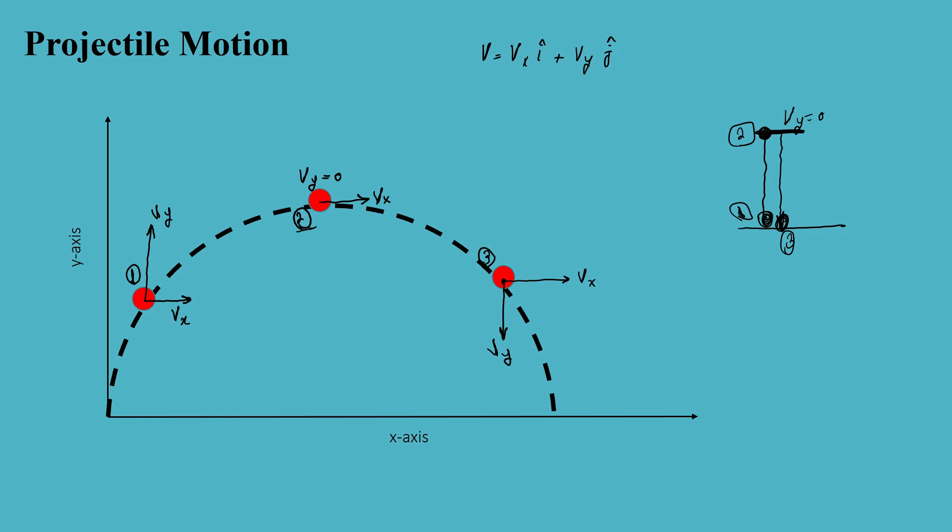Another question you might see in your homework or exam is: is the velocity decreased or increased? Going back to position one, the particle is moving up to reach its maximum, so the velocity at this point is increasing, and both vx and vy are positive. At the maximum, vy is zero and vx is in the positive direction. The most common exam question is: what is v in the y-axis at maximum height? The answer is zero.